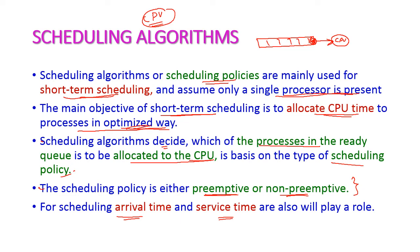Arrival time means at what time the process will enter into the ready queue. Service time means at what time the process will get the CPU for execution — that is the start time. Service time is otherwise called as start time. These two times are very important while calculating scheduling metrics.